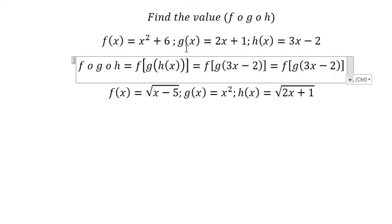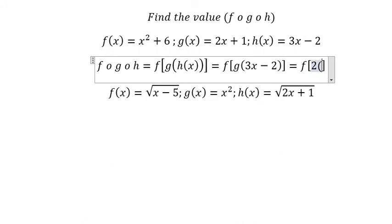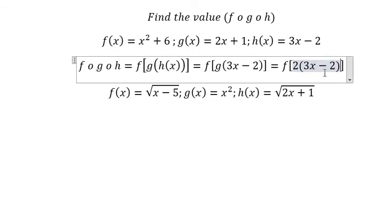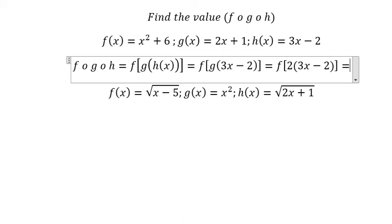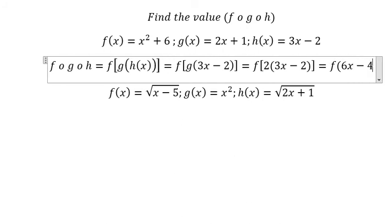For g, we have 2x plus 1, so we put 3x minus 2 into x. So we got f of 6x minus 4.